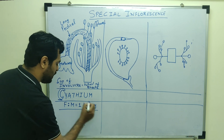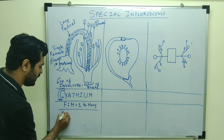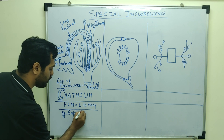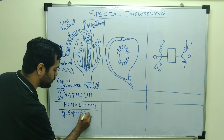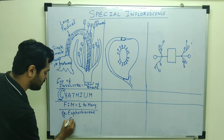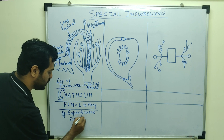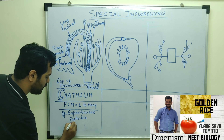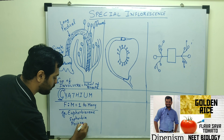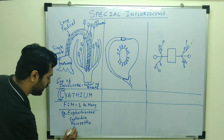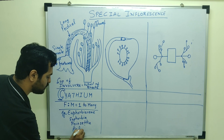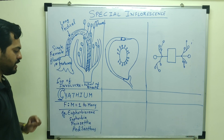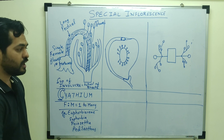All the flowers in cyathium inflorescence are unisexual. Examples of cyathium inflorescence are seen in the family Euphorbiaceae, which is a xerophytic plant family. Examples include Poinsettia and Pedilanthus. These are the major examples of the Euphorbiaceae family which show cyathium inflorescence.